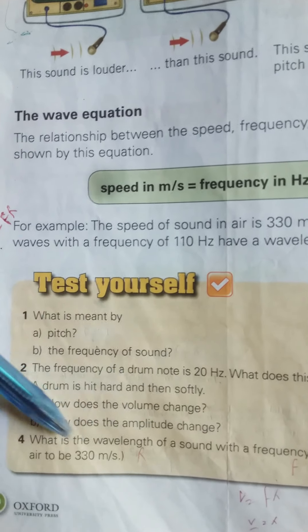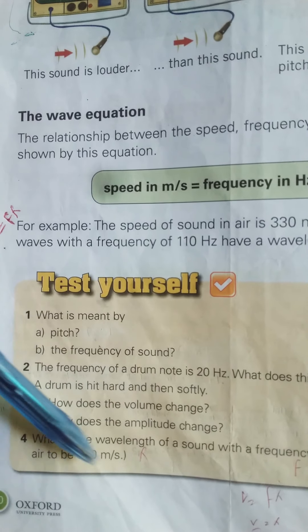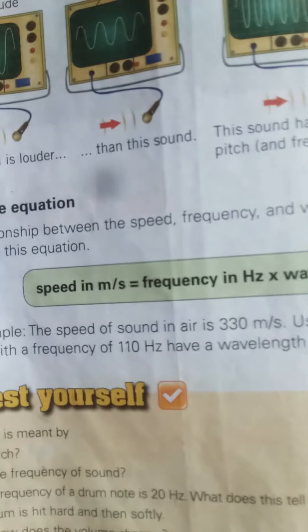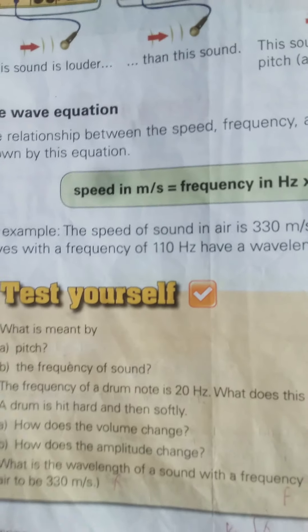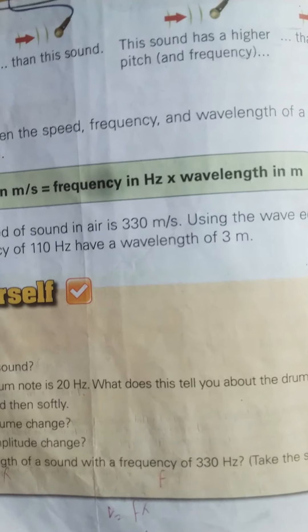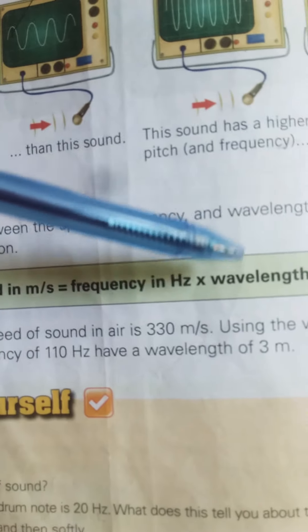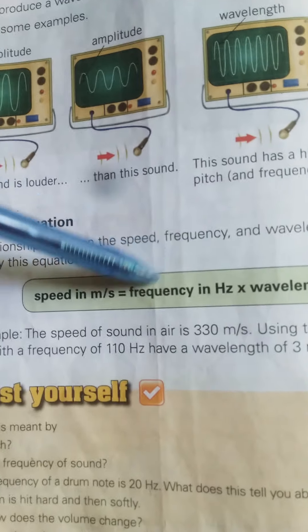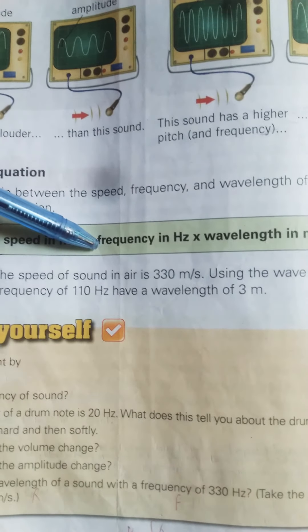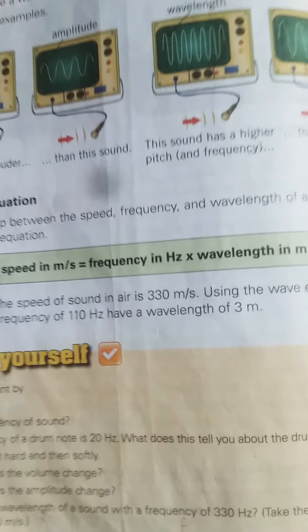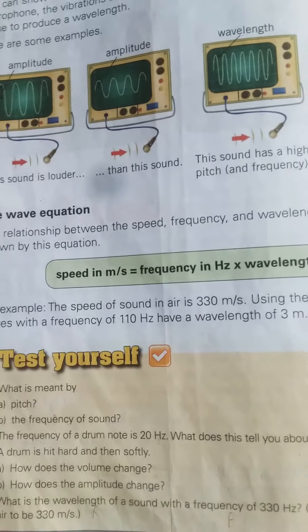If a drum is hit hard then softly, how does the volume change? Volume decreases as amplitude decreases. For the wave equation numerical: frequency is 330 Hz and speed of sound is 330 meters per second. We divide 330 by 330 — the wavelength equals 1 meter. Hope this is clear. Thank you.